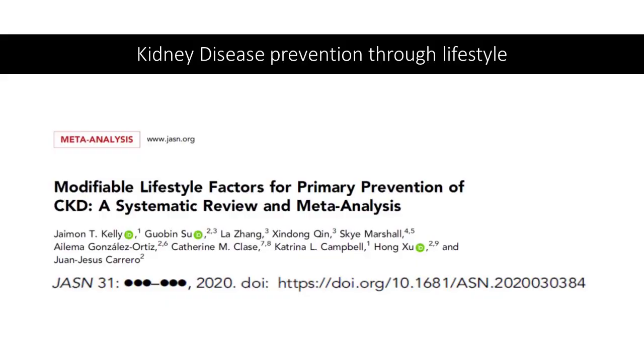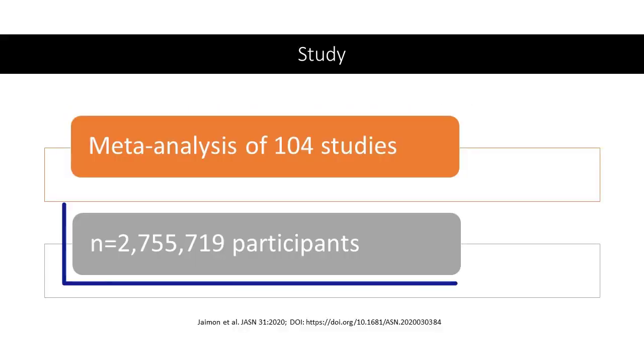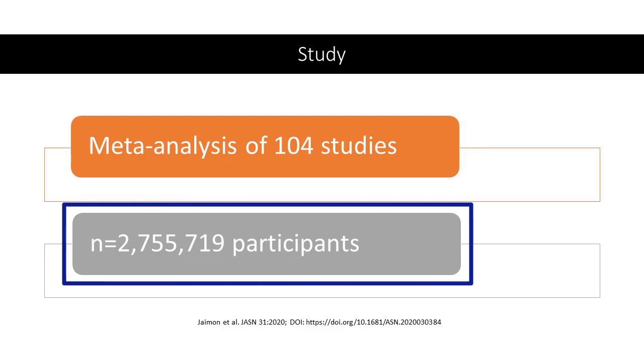So here's a really interesting study that was published in 2020. That was essentially a meta-analysis. That's basically saying they look at a lot of studies and pool all the data together to see what do all of these studies show. And in this particular case, they ended up looking at 104 studies, which is quite a lot, and looking at over 2.7 million participants to arrive at their data. What did they find?